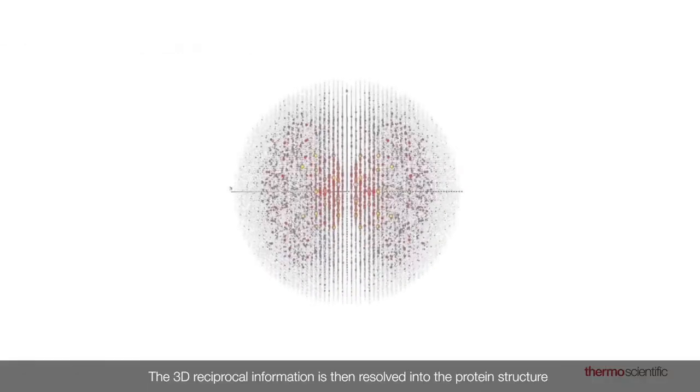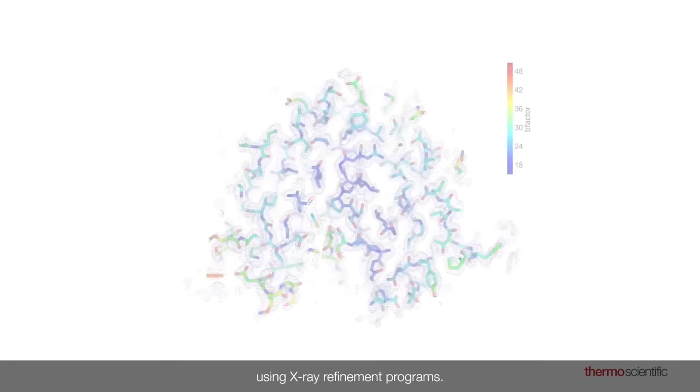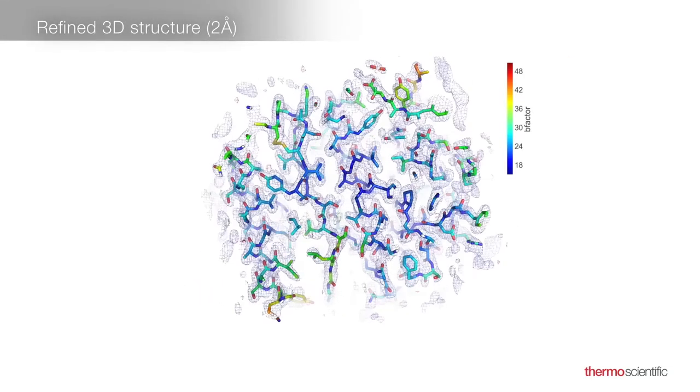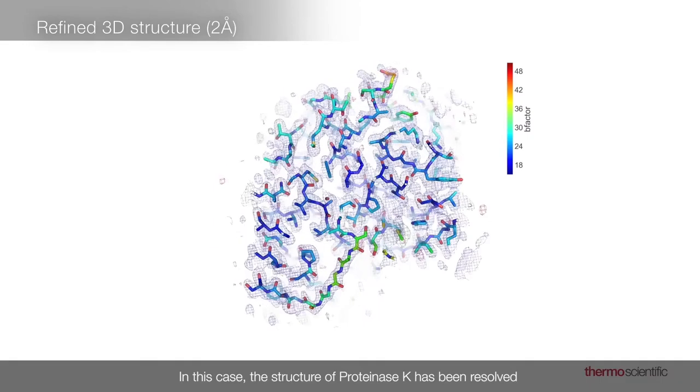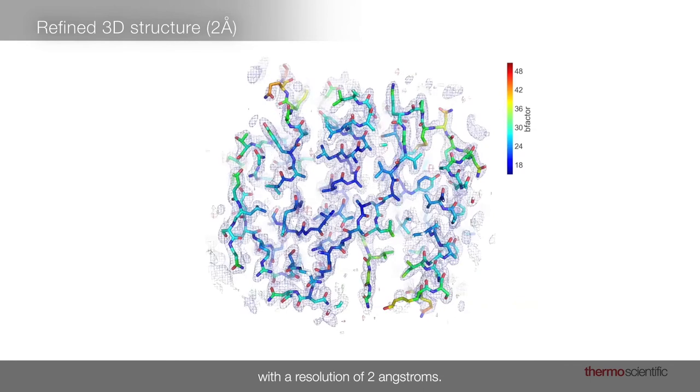The 3D reciprocal information is then resolved into the protein structure using X-ray refinement programs. In this case, the structure of proteinase K has been resolved with a resolution of two angstroms.